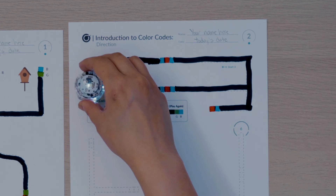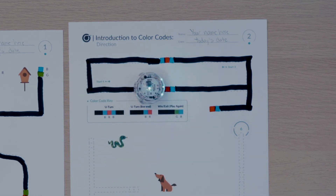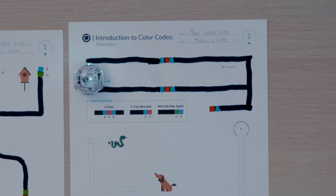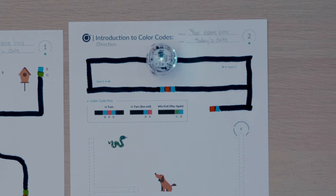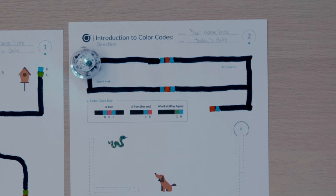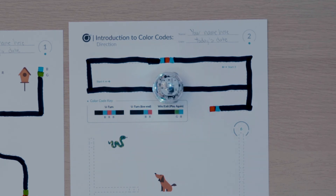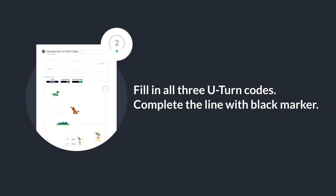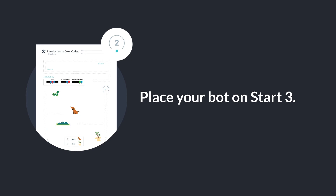Next, I'll find start four and place my bot on the line. The bot travels a very different pathway from start four. Can you fill in all three U-turn codes? Then complete the line with black marker. Place your Ozobot on start three and observe the pathway of your bot. Finally, place your bot on start four and observe the pathway of your bot.